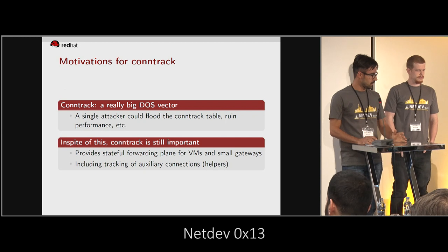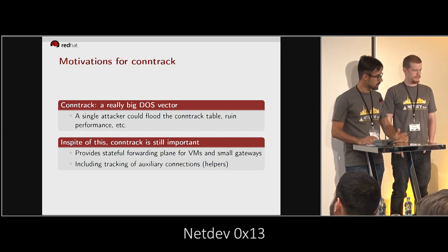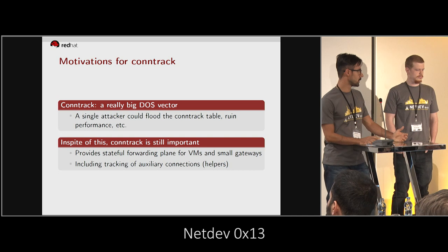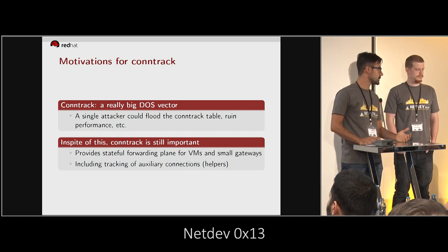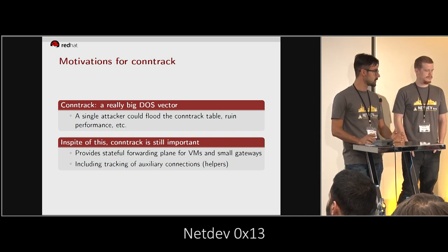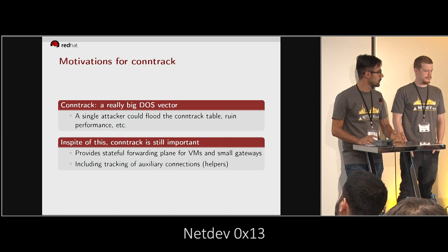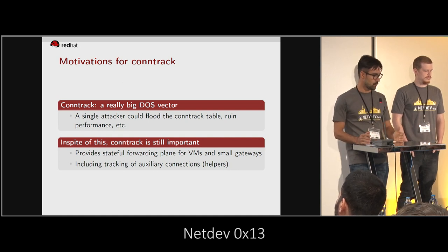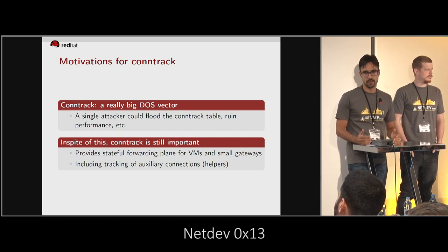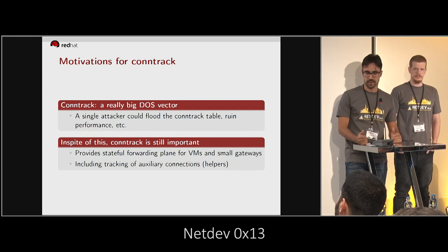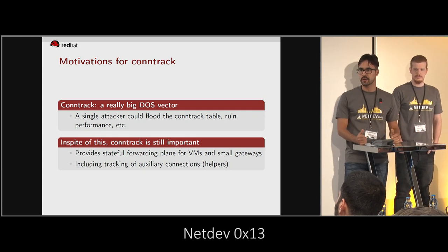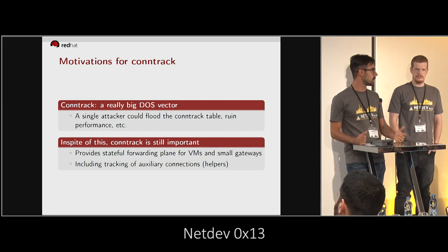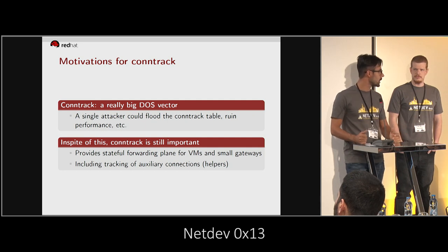But in spite of this, conntrack is still important. It provides stateful forwarding for VMs and small gateways. One of the critical features of it is that it has what they call helpers — they can track auxiliary connections for FTP, for example, so you can have the data connection getting through.